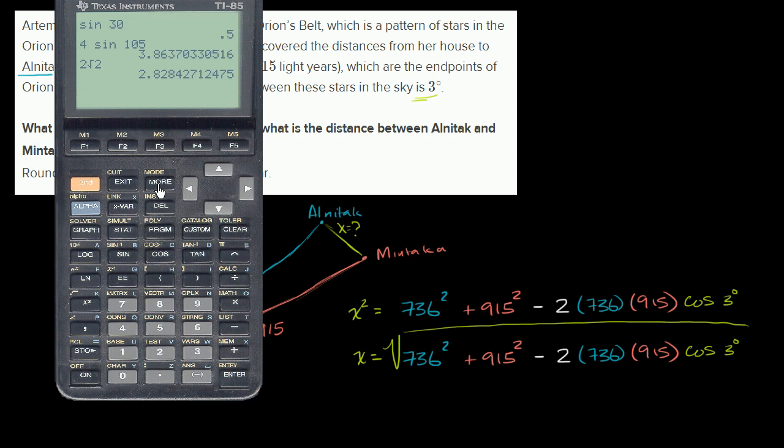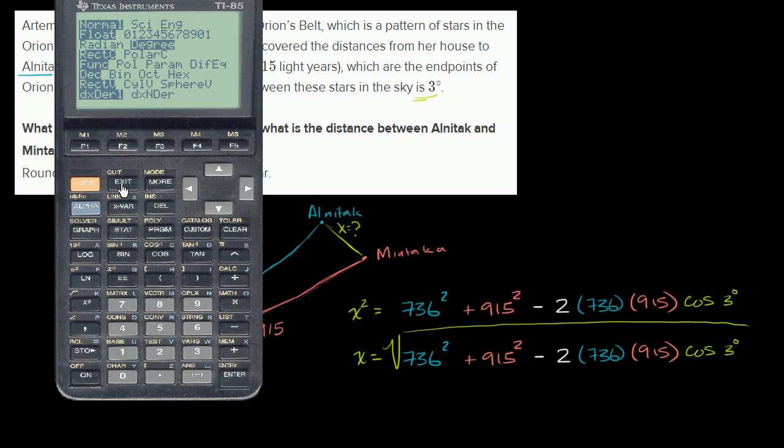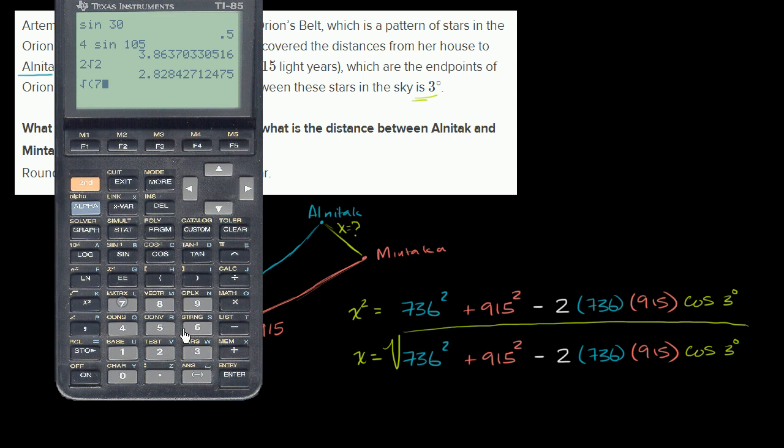And let me verify that I'm in degree mode. Yes, I am indeed in degree mode. And so let's exit that. And so I want to calculate the square root of 736 squared plus 915 squared minus 2 times 736 times 915 times cosine of 3 degrees. And we deserve a drum roll now.